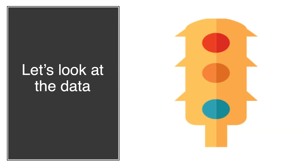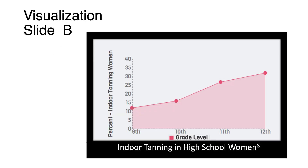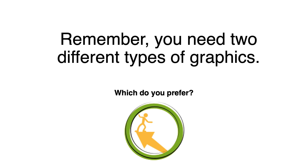Now, let's take a look at some slides representing data. Select which slide is more accurate, A or B. On slide B, both the X and Y axis are labeled. For this assignment, you will need different types of graphics for your data.